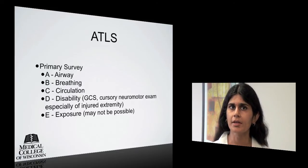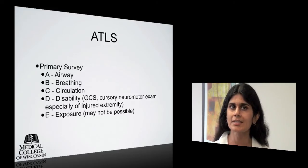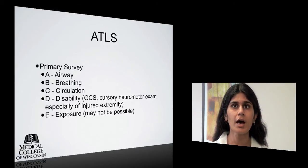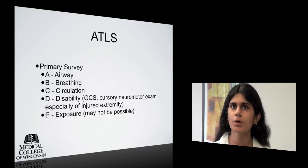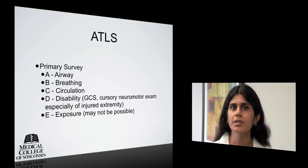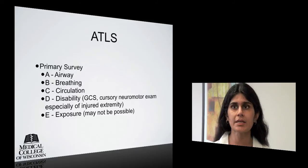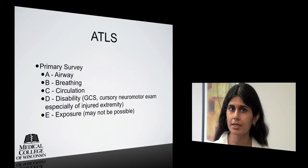A is for airway, assessed by asking the patient his or her name — proper phonation ensures an intact airway. B is for breathing; the chest wall should be inspected, auscultated, and palpated if possible. An example of a B problem is a tension pneumothorax. C is for circulation; the pulse rate, quality, and character are important in assessing C. D is for disability; calculation of the Glasgow Coma Score and a cursory neuromotor exam, especially of the injured extremity if possible, should be performed. E is for exposure, which may not be possible in the field.